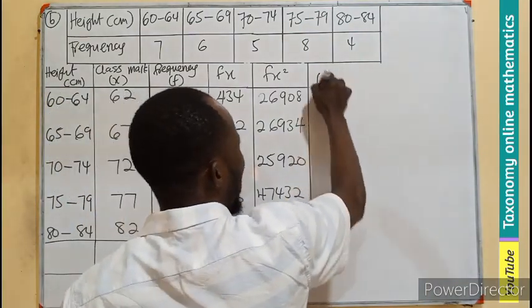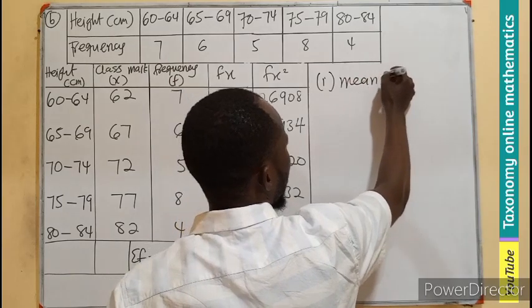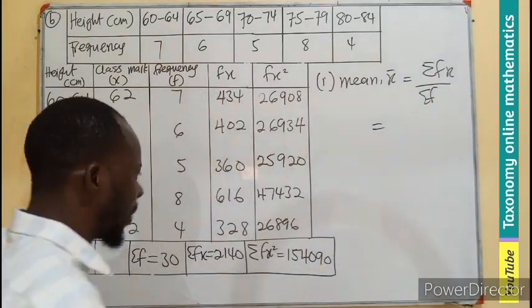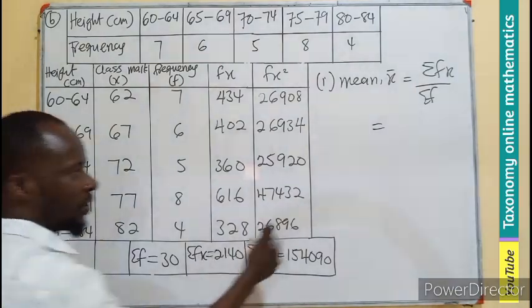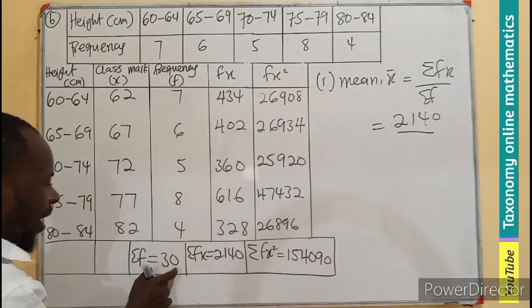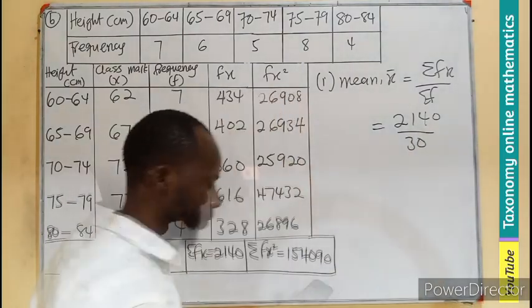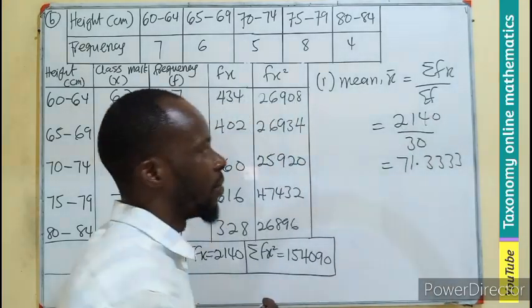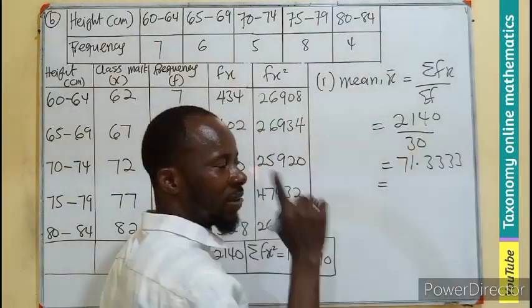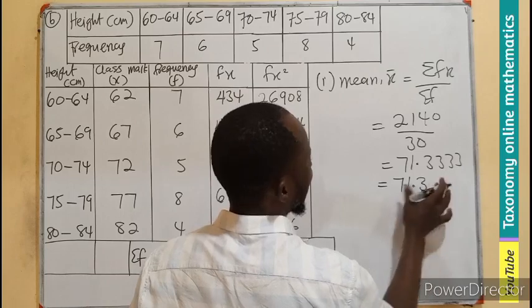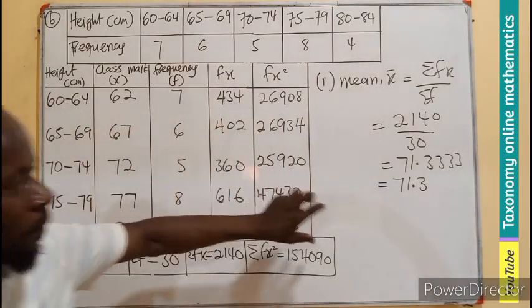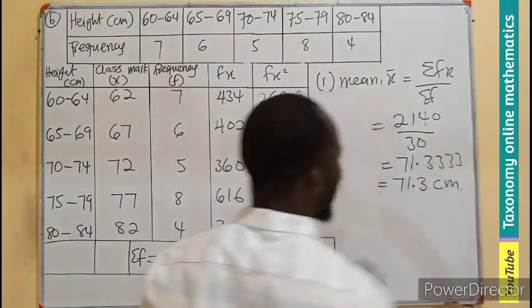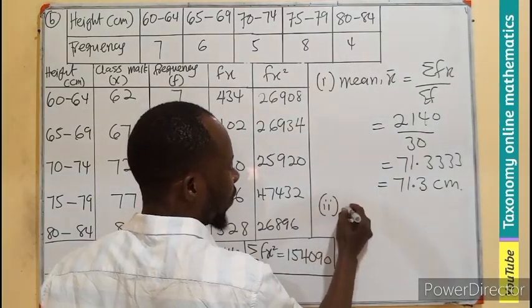We can go ahead and find the mean, which is the sigma fx over the sigma f. Simply put, 2140 divided by 30. That will give us 71.3333 recurrent. But the question is asking for one decimal place. So 71.3 centimeters is going to be the value of the mean.